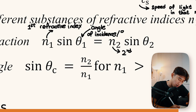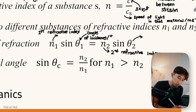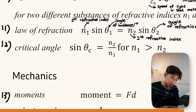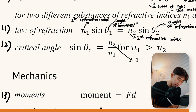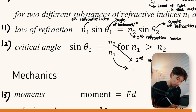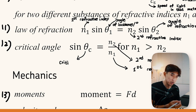The critical angle is derived by substituting sinθ₂ = sin90° = 1 into Snell's law, giving sinθ_c = n₂/n₁, where n₂ is the second refractive index and n₁ is the first. To find the critical angle, take the inverse sine of n₂/n₁, giving the result in degrees.